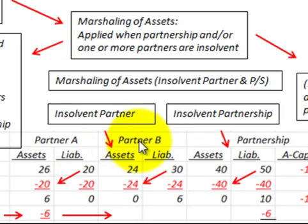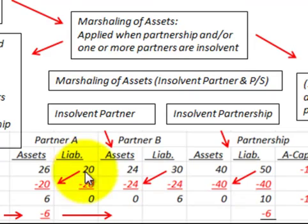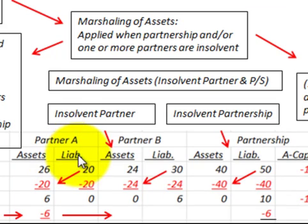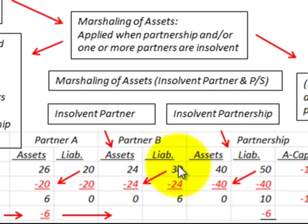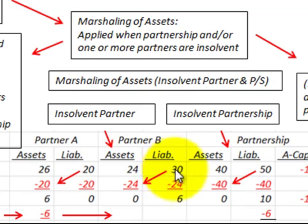We have Partner A and Partner B. Partner A has assets of $26,000 and liabilities of $20,000, so their assets are greater than their liabilities — Partner A is solvent. Moving over to Partner B, they have assets of $24,000 and liabilities of $30,000. They have less assets than liabilities, so they are insolvent.